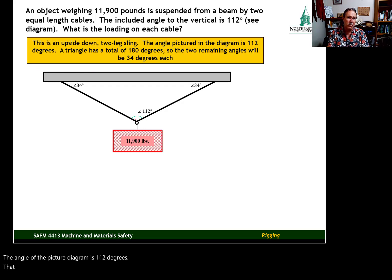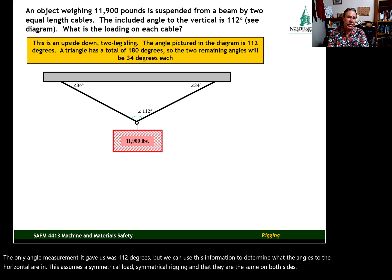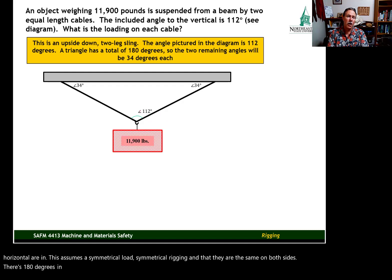The problem didn't give us the angle to the horizontal like it did in previous problems. The only angle measurement it gave us was 112 degrees. But we can use this information to determine what the angles to the horizontal are. This assumes a symmetrical load, symmetrical rigging, and that they're the same on both sides. There's 180 degrees in a triangle. We have 112. 180 minus 112 equals 68. 68 divided by 2 equals 34 degrees in each angle.